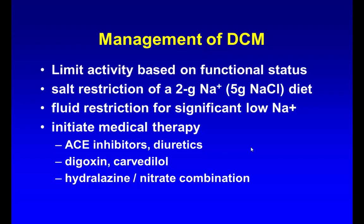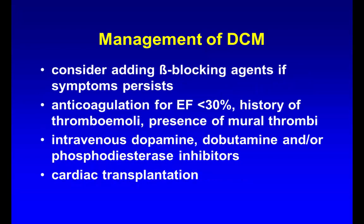Prognosis is very poor as previously stated. Patients could have an implantable cardioverter-defibrillator to prevent death when their functional status is very poor. Beta blockers and anticoagulants are most likely indicated if the ejection fraction is less than 30%, or if they have had a prior thromboembolic event. Digoxin can be used, and dopamine or dobutamine if patients are hospitalized with no other option. Patients should ultimately receive cardiac transplantation.